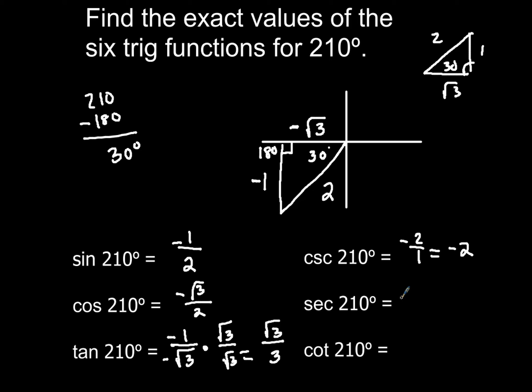The secant of 210. So now I'm going to have 2 on top, square root of 3 on the bottom. One of them is going to be negative, but I've got to rationalize again. So you have to multiply the top and the bottom by square root of 3. So you'll end up with 2 square roots of 3 over 3.